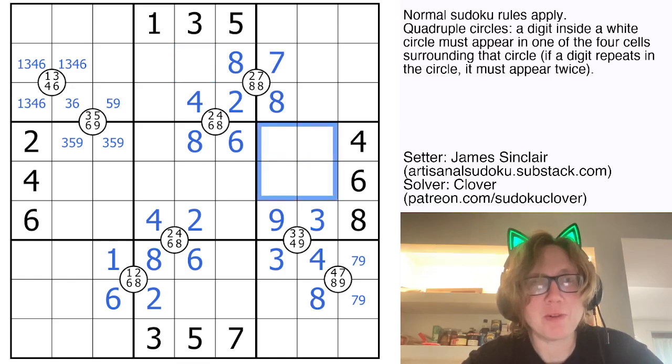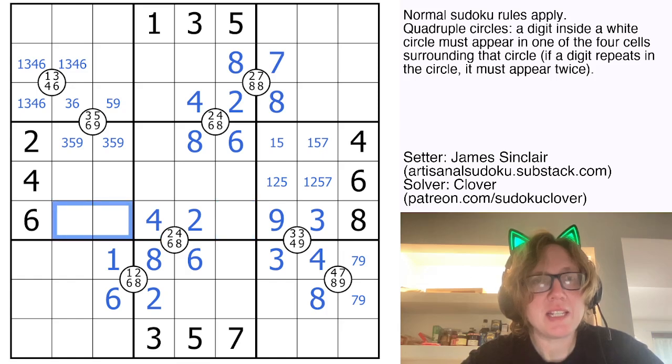So in this region, I need one, two, five, and seven. That can't be a seven. That can't be a two. Here I need one, five, and seven to finish the row. Row six, I have five and seven here. So this will be a one, making this a five, seven pair.